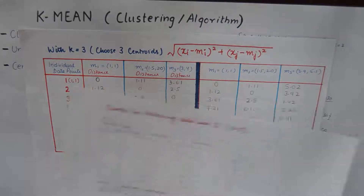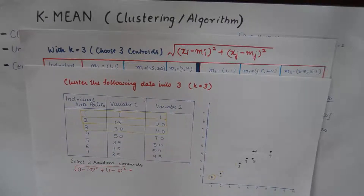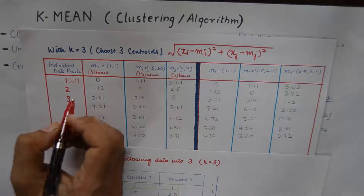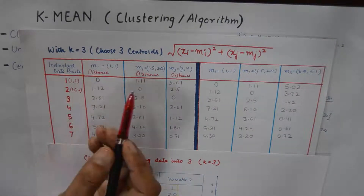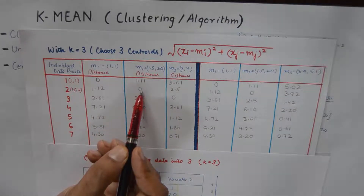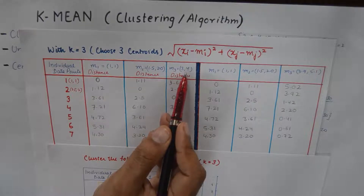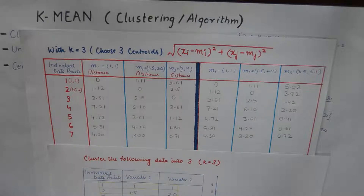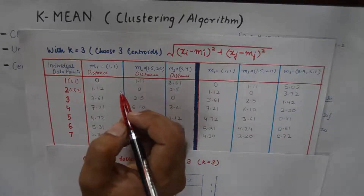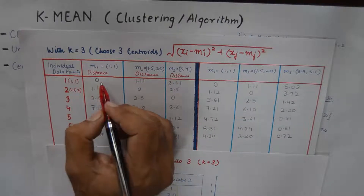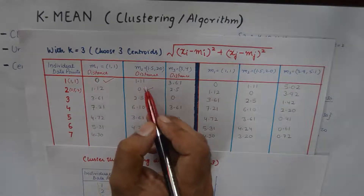This process is iterative in nature but must be done rigorously to correctly solve the given numerical. Data point 2 is at (1.5, 2), which coincides with centroid 2, so its distance from centroid 2 is zero. Its distance from centroid 1 is 1.12, and its distance from centroid 3 at (3, 4) is 2.5. The lowest Euclidean distance determines which cluster a data point belongs to. So data point 1 goes into cluster 1, and data point 2 goes into cluster 2 because it has zero distance from centroid 2.